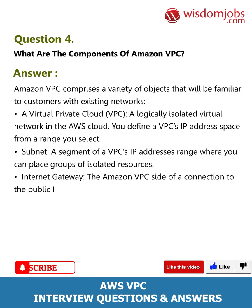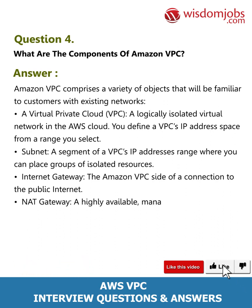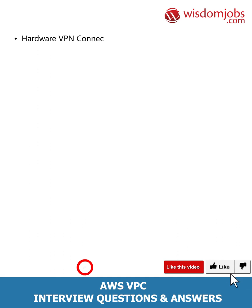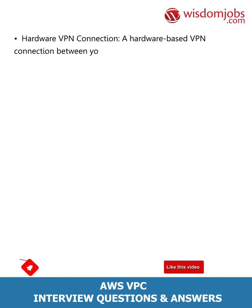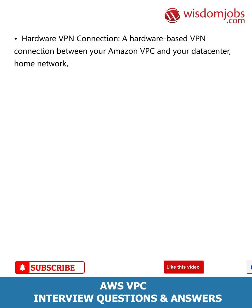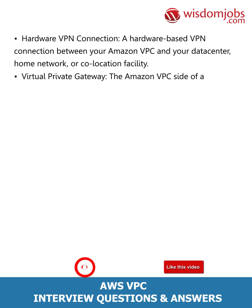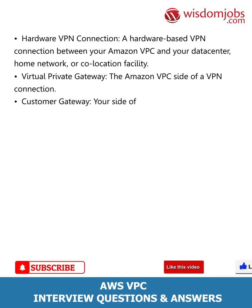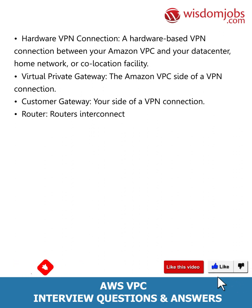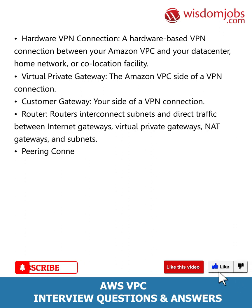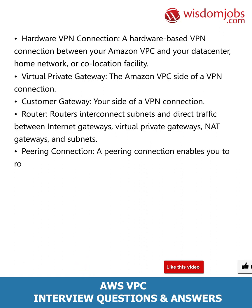An internet gateway is the Amazon VPC side of a connection to the public internet. A NAT gateway is a highly available, managed network address translation (NAT) service for your resources in a private subnet to access the internet. A hardware VPN connection is a hardware-based VPN connection between your Amazon VPC and your data center, home network, or colocation facility. A virtual private gateway is the Amazon VPC side of a VPN connection. A customer gateway is your side of a VPN connection. Routers interconnect subnets and direct traffic between internet gateways, virtual private gateways, NAT gateways, and subnets.